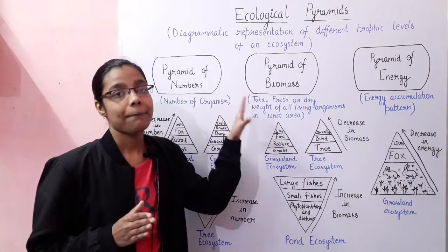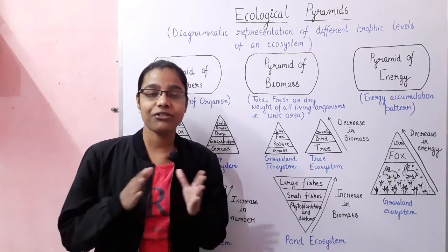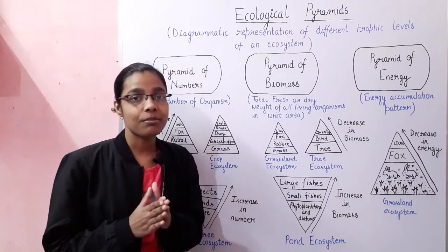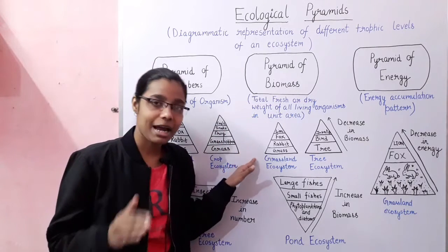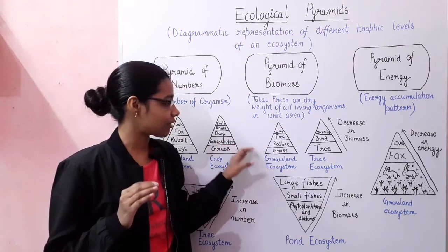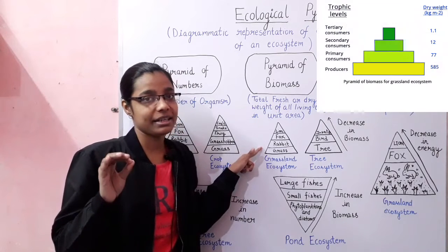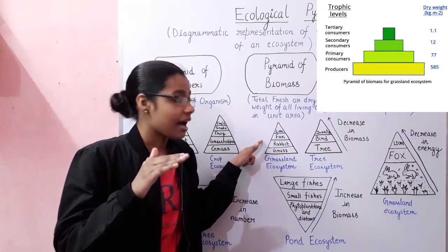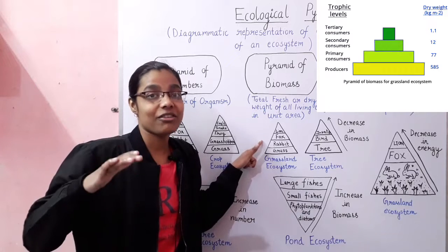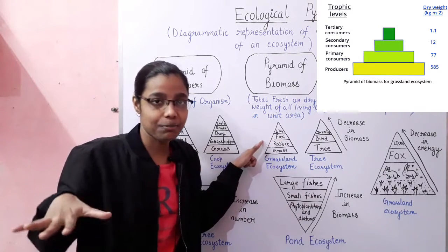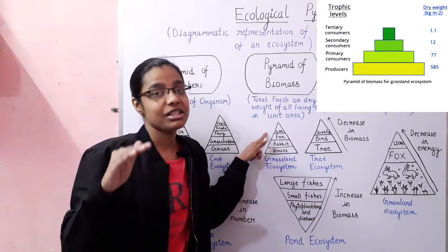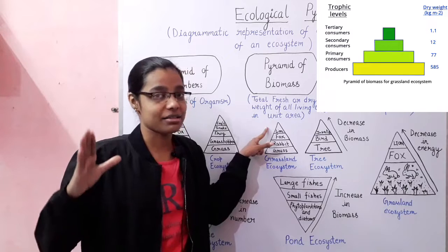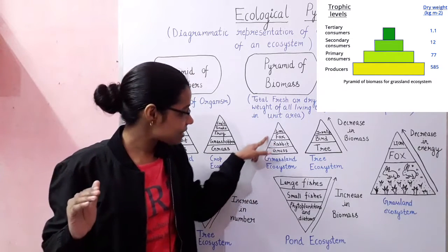Coming to the pyramid of biomass: biomass is the total fresh or dry weight of all living organisms in a particular area. In the grassland ecosystem, this gives an upright pyramid. At the base, producers — grasses — have the highest biomass. Rabbits have lesser biomass than the grasses, fox has lesser biomass than the rabbit, and finally lion has the least biomass.